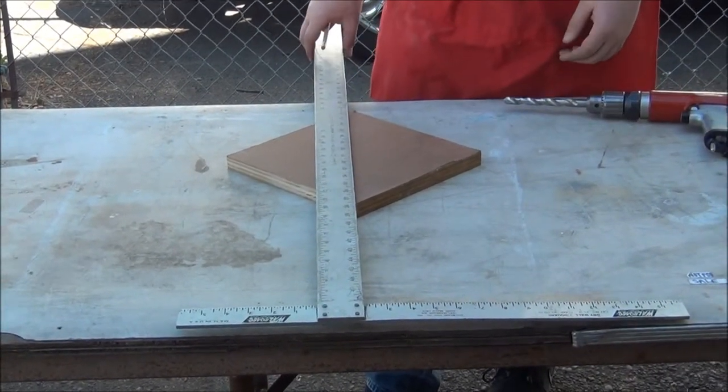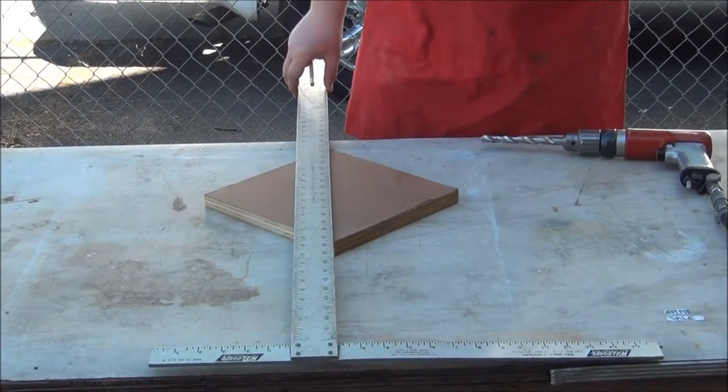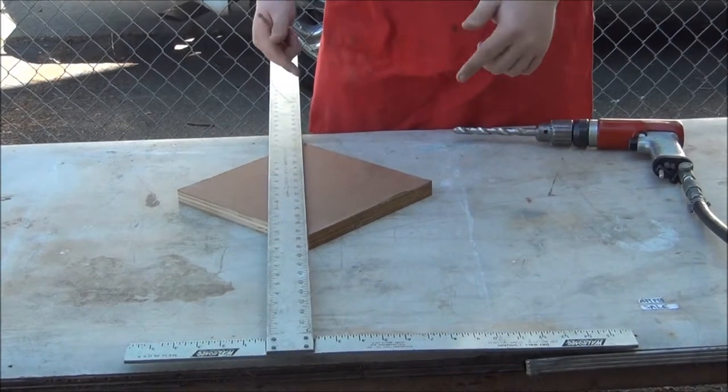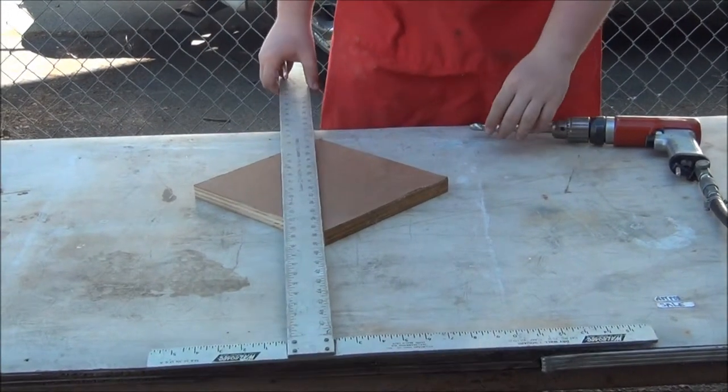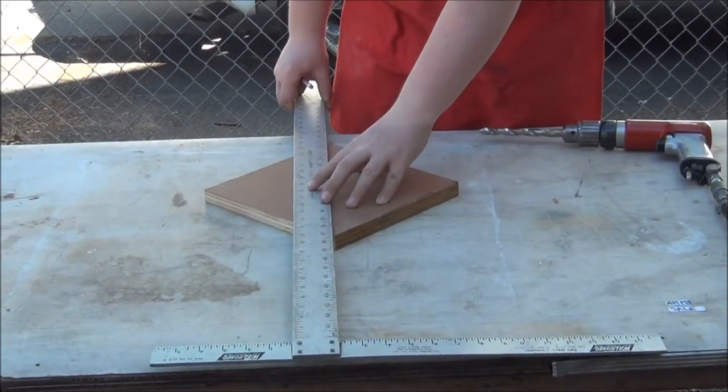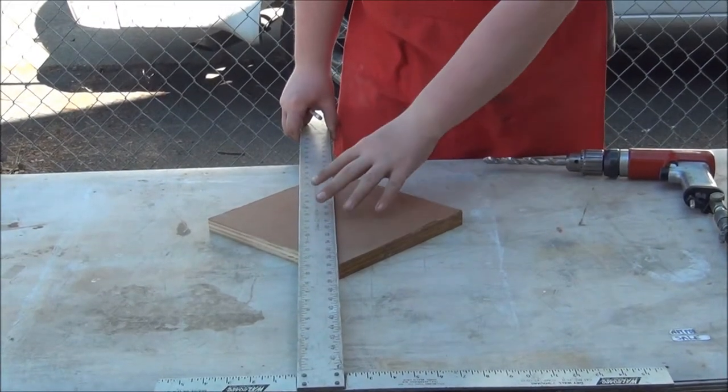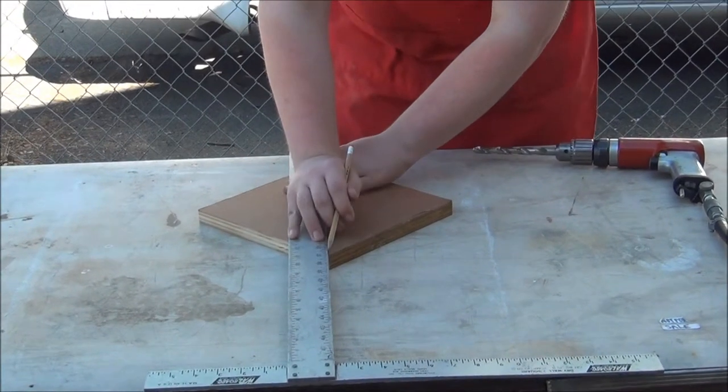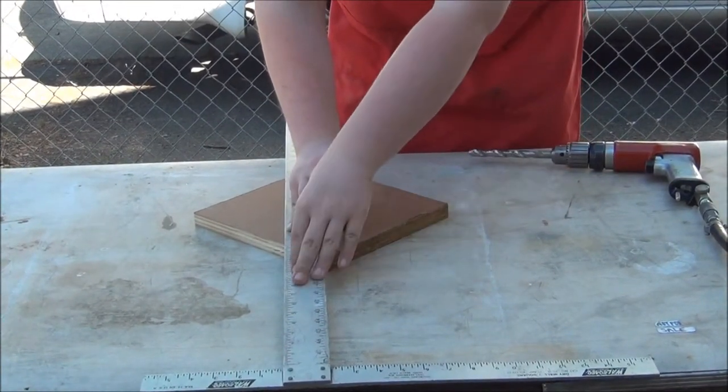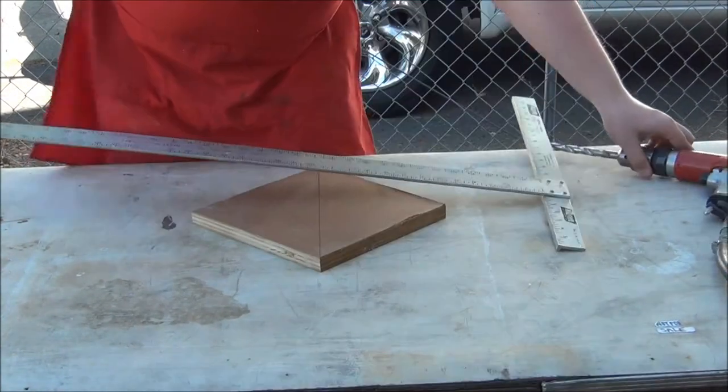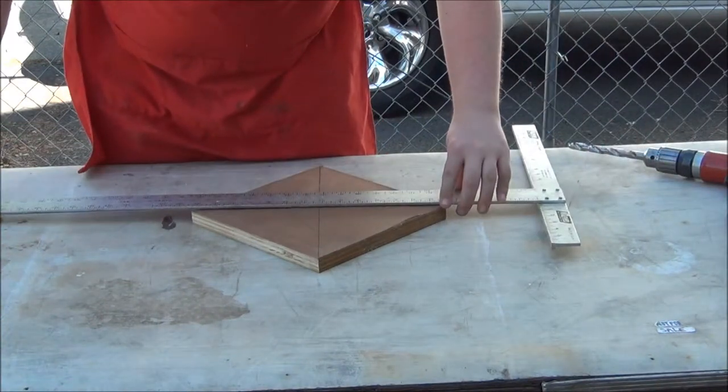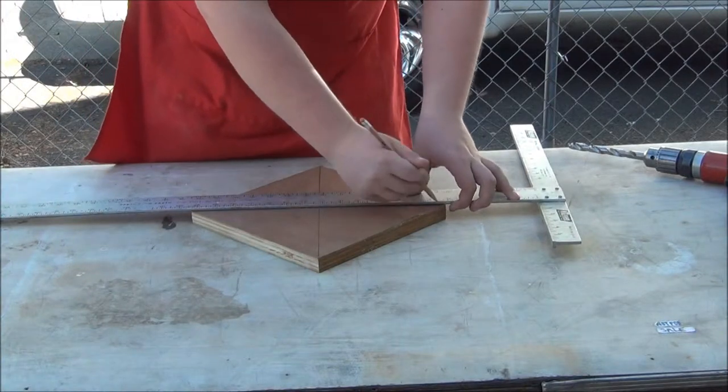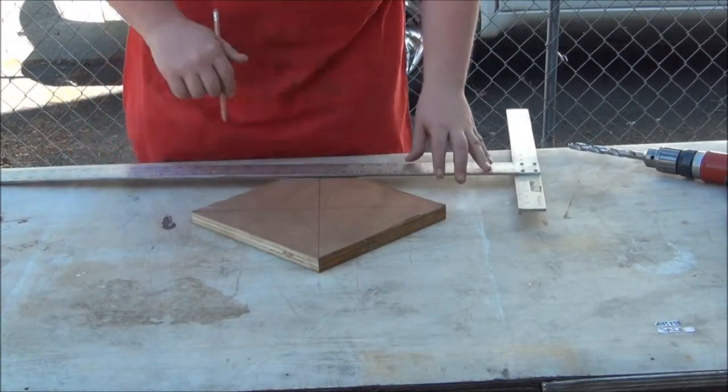Now we've got to find the very center of this one square foot piece. Luckily, if I remember correctly from geometry class, all we've got to do is connect the points that are across from each other. So you just line up the square or whatever straight edge you're using on one point with the other point diagonal to it, and you make a line. And then you do the other way and look at that, it's right in the middle.